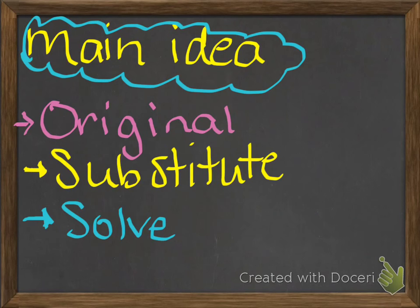You want to remember that you're supposed to be copying everything that is written on the screen, even if it's also written in the textbook. The information I'm giving you here is in addition to the textbook, so you should be writing this in the margin. The main idea here is that you have the original problem, you're going to substitute, and then you solve. That'll make a little more sense as we go through the section.